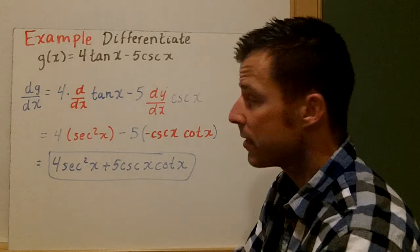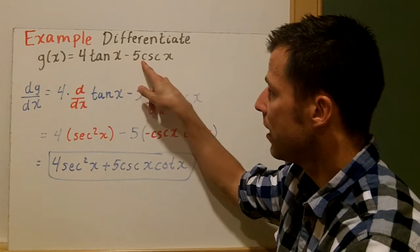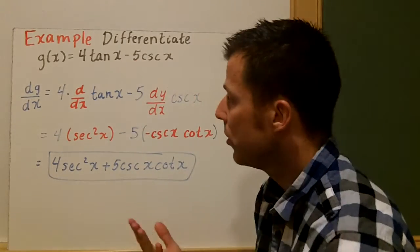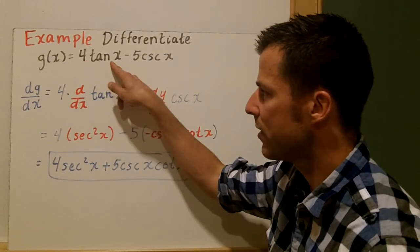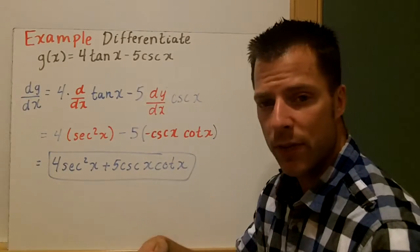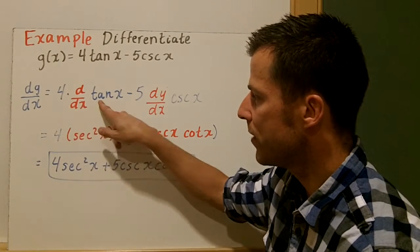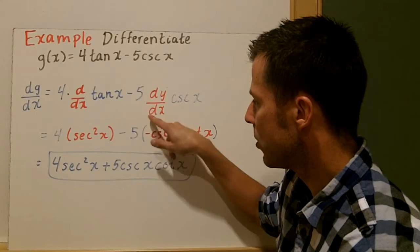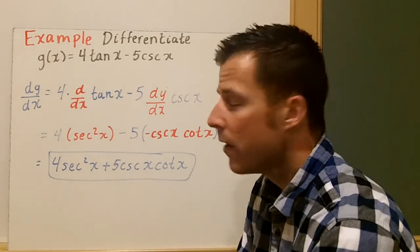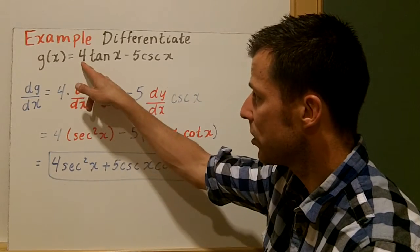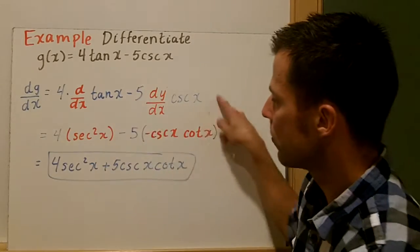This example: differentiate g of x equals 4 times the tangent of x minus 5 times the cosecant of x. What we're going to do here is separate this function out. You might think there's product rule here, but let's be careful. Let's use some basic differentiation rules and rewrite this. We're going to take 4 times the derivative of tangent of x minus 5 times the derivative of cosecant x, using our basic sum, difference, and constant multiple rules. We can bring the 4 and the 5 out and just differentiate the trig functions.